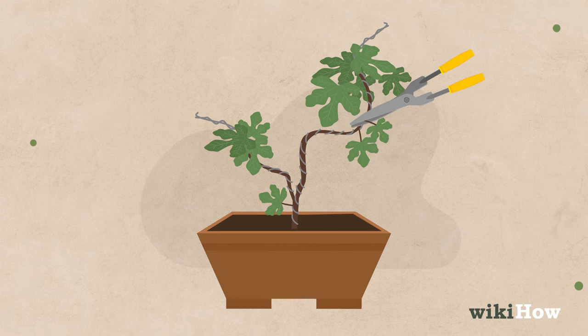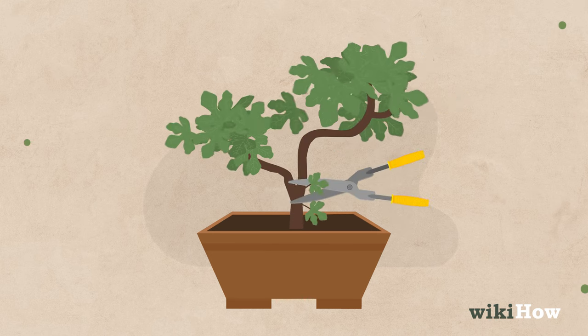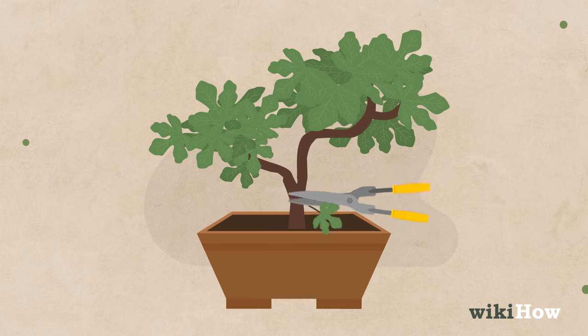Prune your bonsai tree whenever it starts growing too fast or gets bigger than you'd prefer. With a small container and some regular pruning, you'll be able to keep your plant dwarf sized.